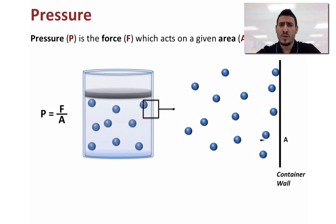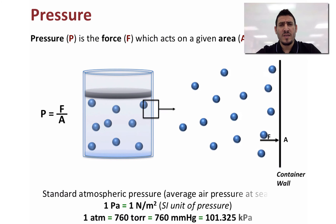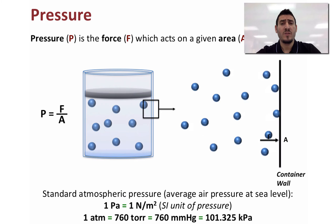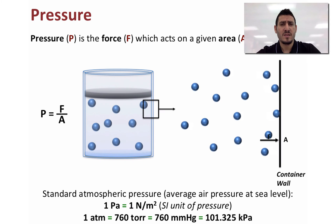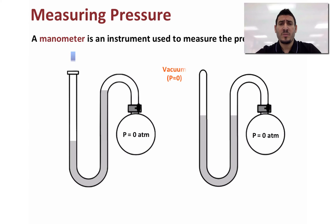Since force is measured in Newtons and area in meters squared according to the international system, the unit of the standard atmospheric pressure is the Pascal. One Pascal is equal to one Newton per meter squared. Using the international system we can also use units such as atmosphere, torr, millimeter Hg, or kilopascal. One atmosphere is equal to 760 torr, which equals 760 millimeter Hg, and equals 101.325 kilopascals, or approximately 100,000 Pascals. To measure pressure we use devices such as a manometer.